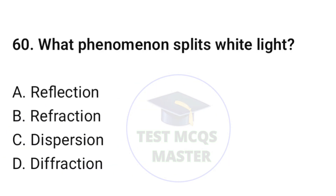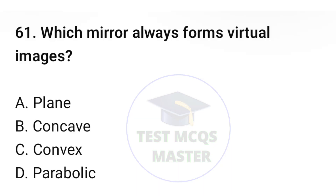Question number sixty: what phenomenon splits white light? The correct option is C, dispersion. Question number sixty-one: which mirror forms virtual images? The correct option is C, convex.